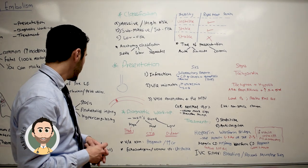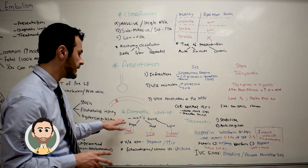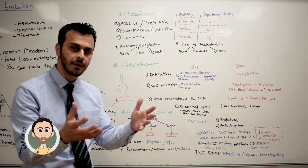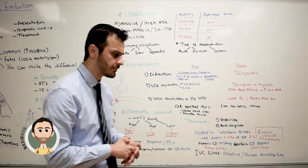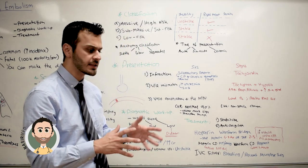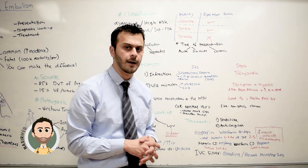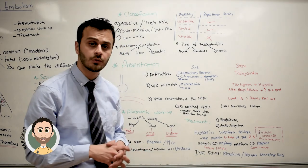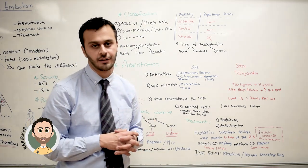Now, moving on to the diagnostic workup. When you suspect pulmonary embolism in a patient, you first get the Wells criteria. The Wells criteria will give you a number, and based on that number you categorize the patient as low, moderate, or high suspicion for pulmonary embolism.